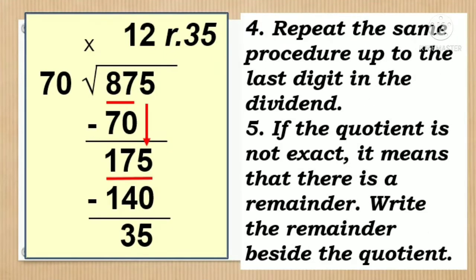Repeat the same procedure up to the last digit in the dividend. If the quotient is not exact, it means that there is a remainder. Write the remainder beside the quotient.